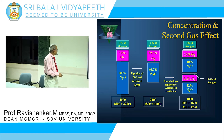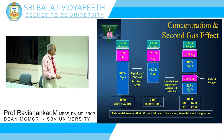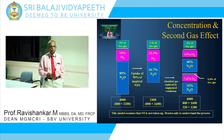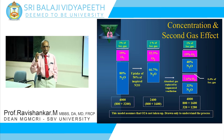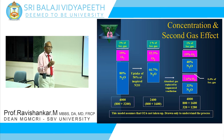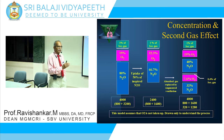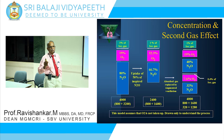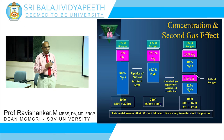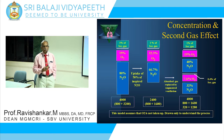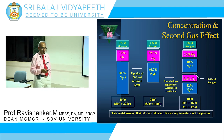This model assumes only nitrous oxide is being taken up. It is used to explain the concept of concentration effect and second gas effect. This happens predominantly at the time of induction when there is very fast movement of nitrous oxide from the alveoli into the blood. After equilibration is reached, all this ceases.